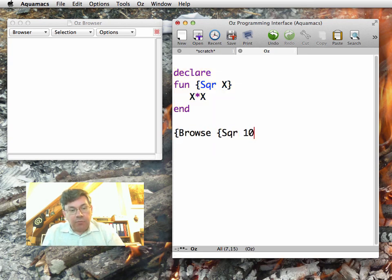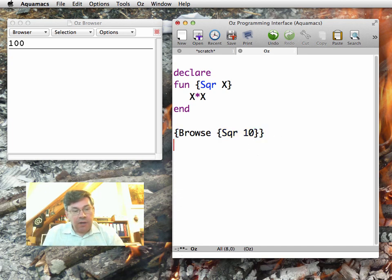Now I can display the browse, and I do square of 10 here. Remember, function calls, like procedure calls, have the braces surrounding them. This displays 100.